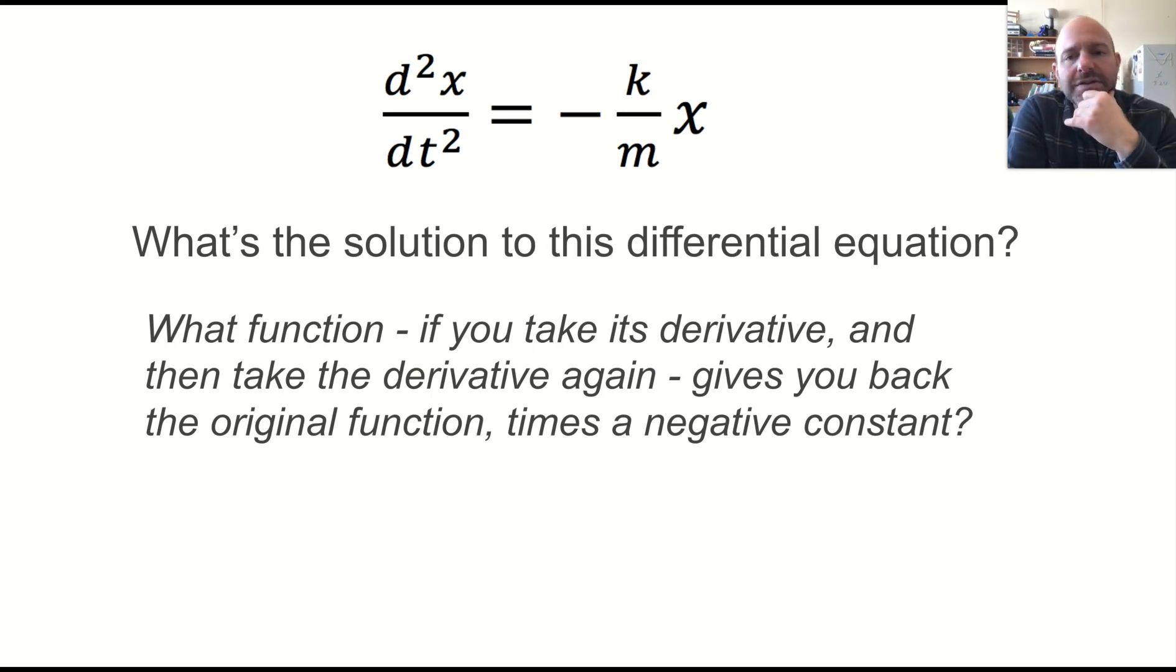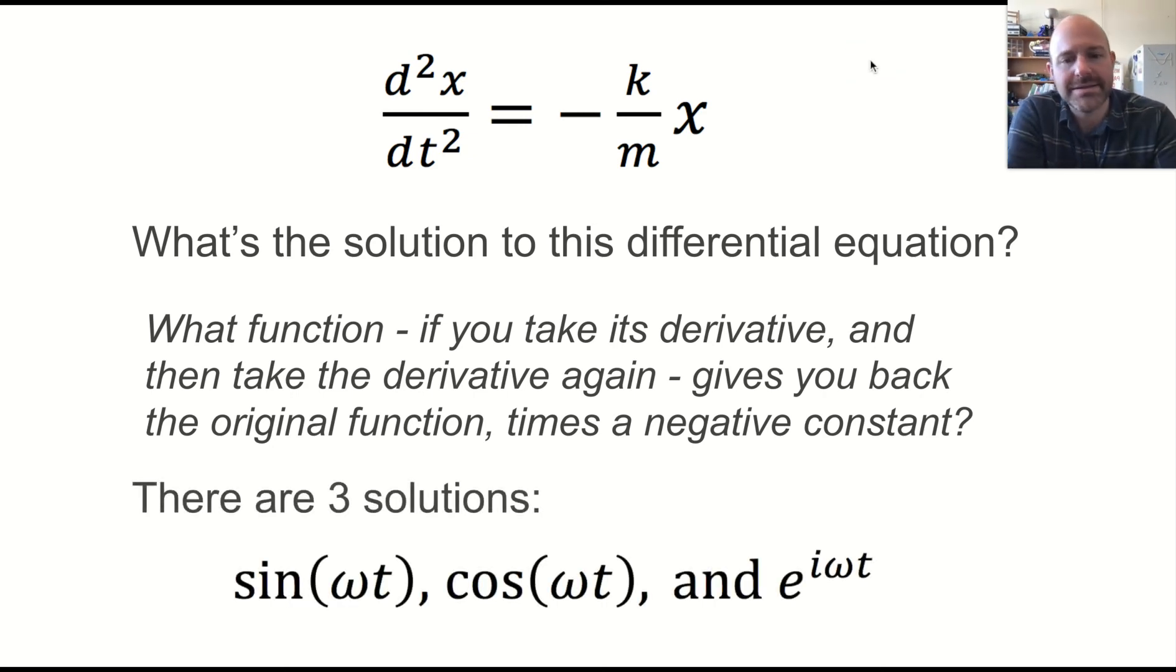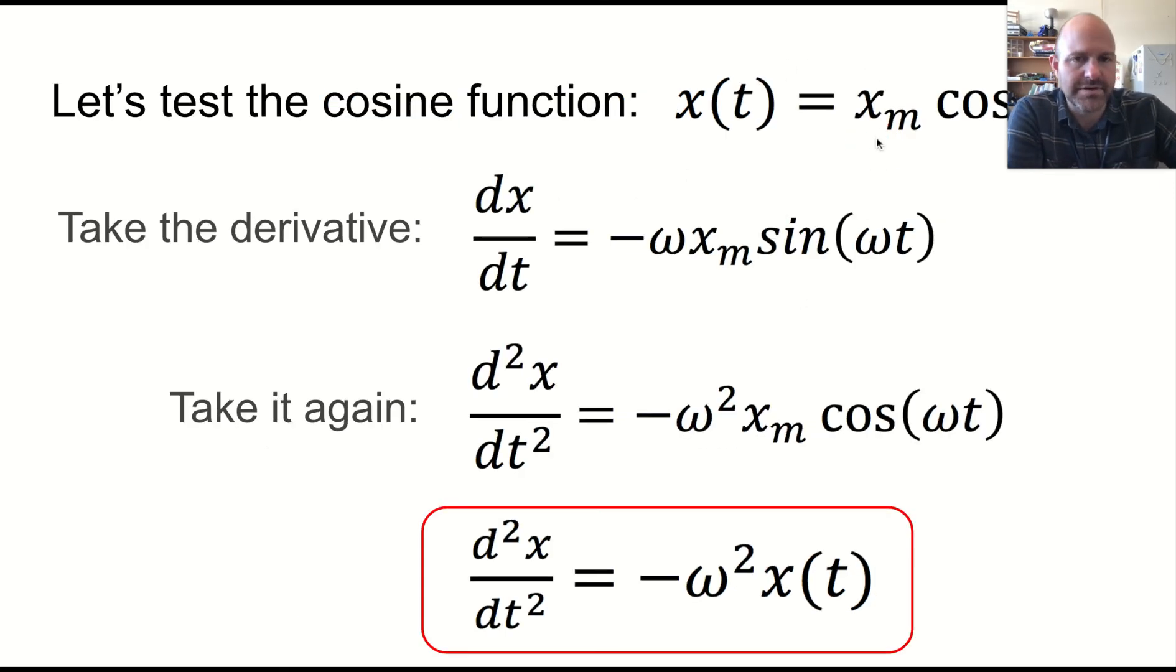And I'm not asking you to solve this. I'm just working you through it. But what function, if you take its derivative, gives you back the original function and a negative constant? Well, that's one of these three things, a sine, a cosine, and e to the i omega t.